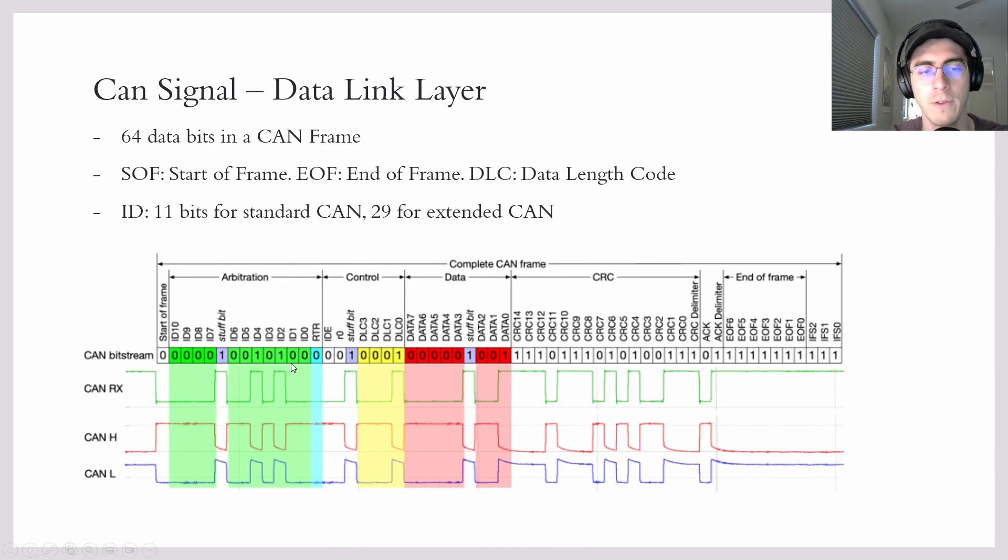So moving on, after the CAN node gets access to the bus, it will send the DLC. So DLC stands for data length code. And this pretty much just says, my message has this many bytes. Because even though we have 64 bits of data available in the CAN frame, we might only have three bits of data or 13 bits or 21 bits. We don't necessarily need to use all 64 bits. So the DLC just says you can expect this much data.